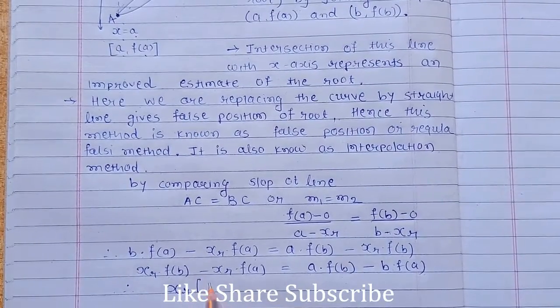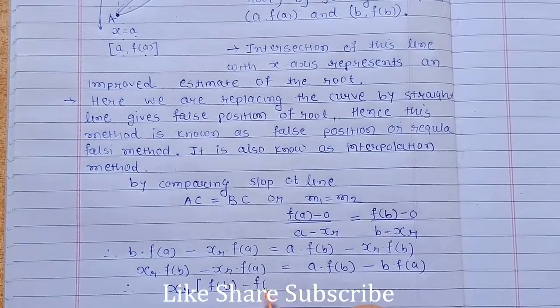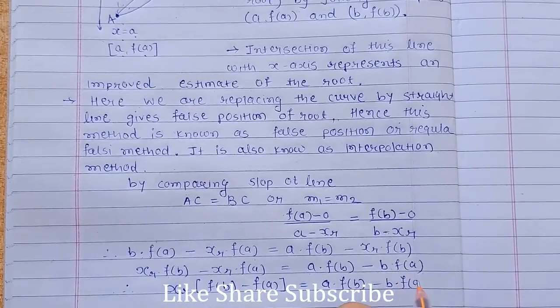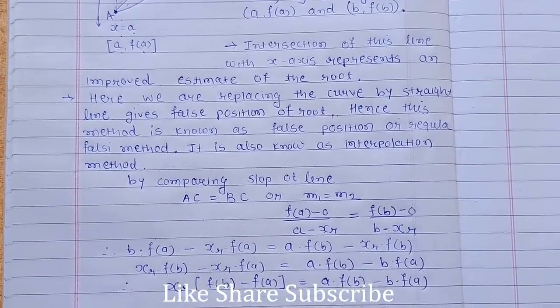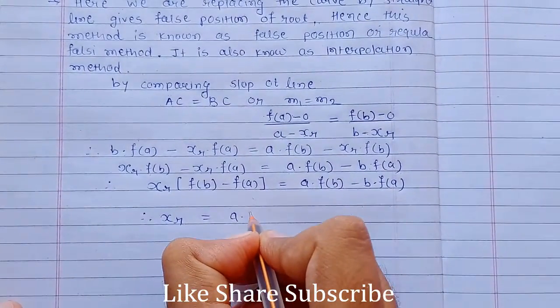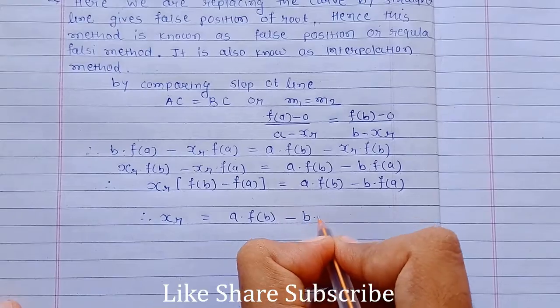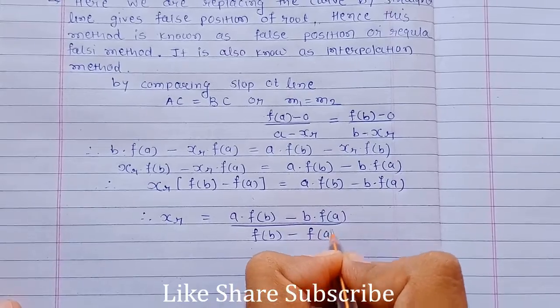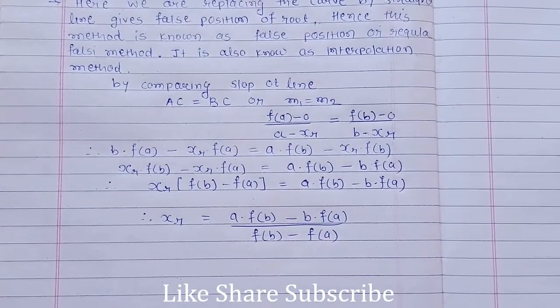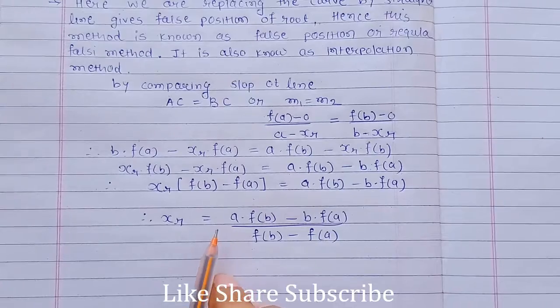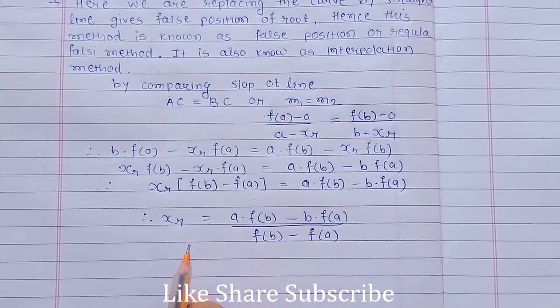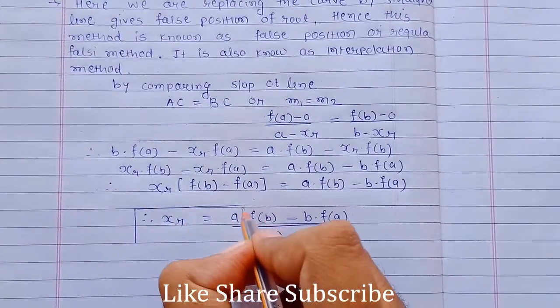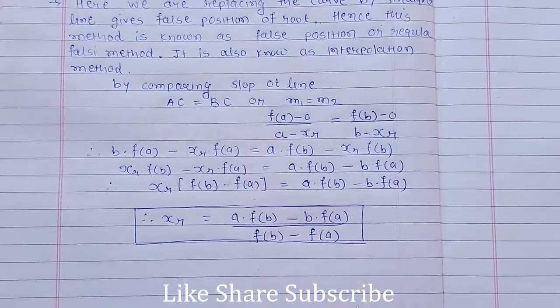xr into f of b minus f of a equals a into f of b minus b into f of a. Since xr equals a into f of b minus b into f of a divided by f of b minus f of a, this is the equation for finding out the new approximated root using regula falsi method. We will use this equation for finding the new approximation while solving using regula falsi method.